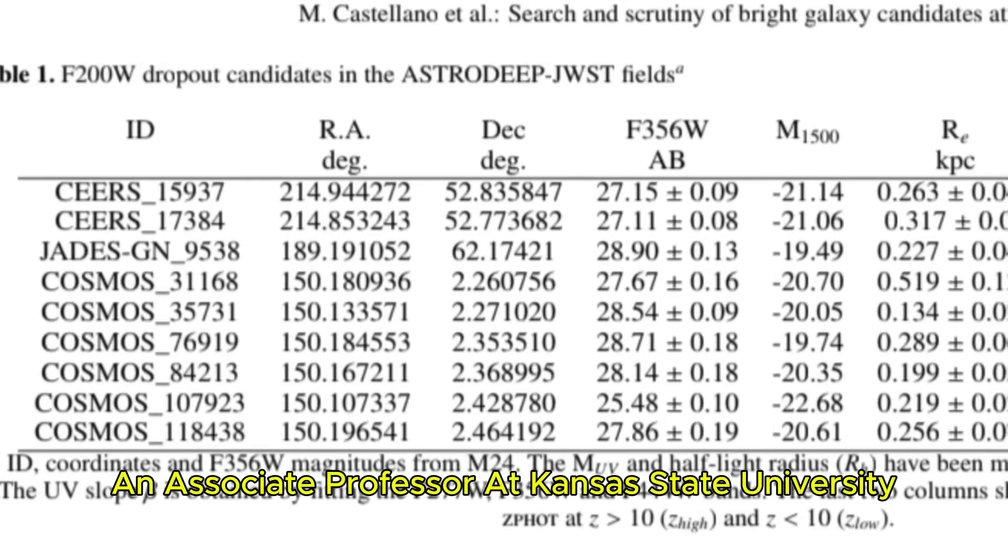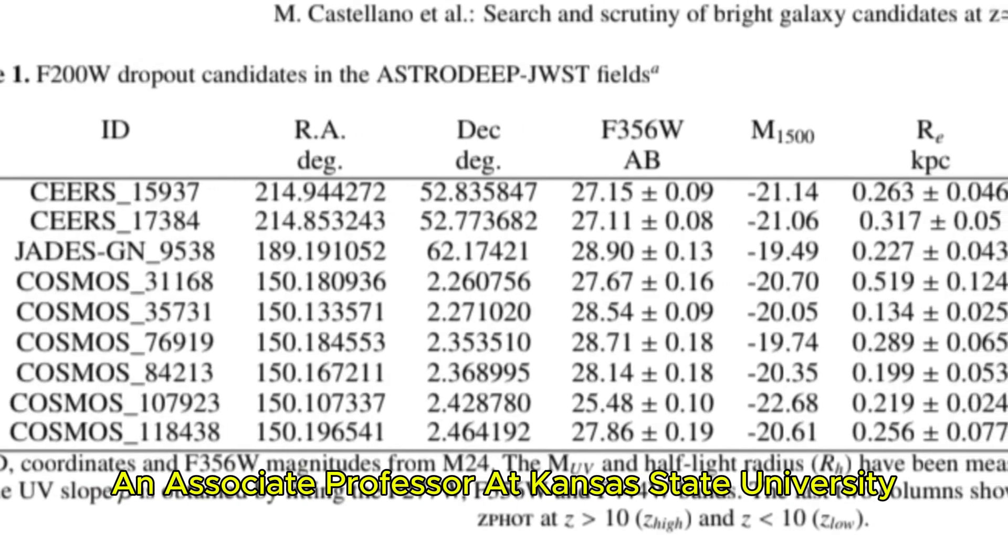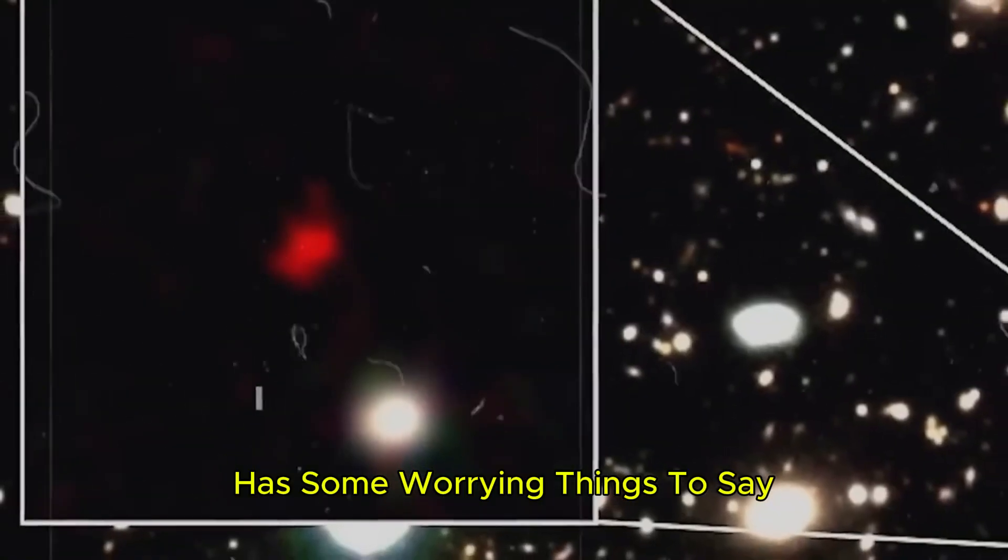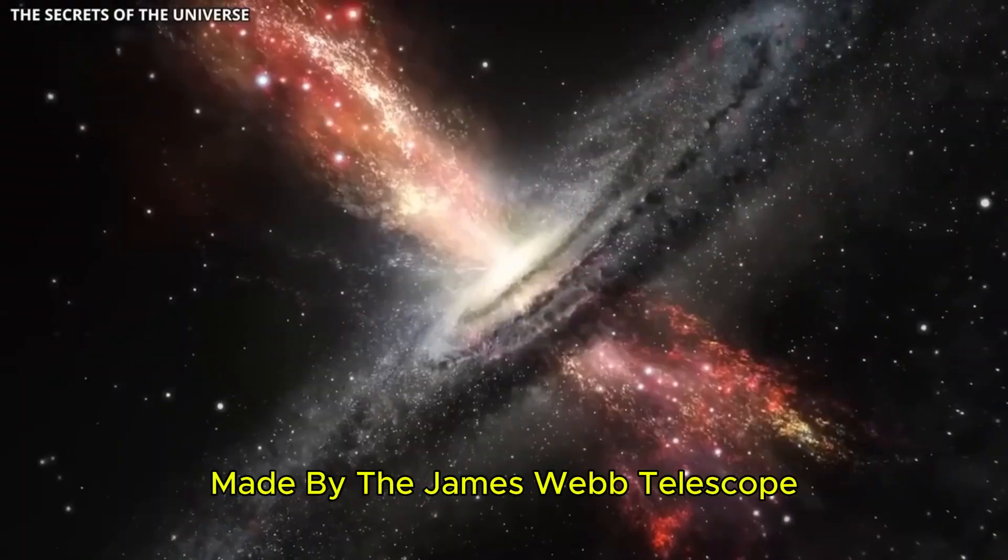Lur Shamir, an associate professor at Kansas State University, has some worrying things to say about the current discoveries made by the James Webb telescope.